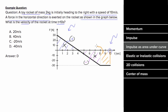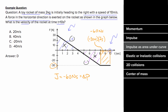This is gonna end up being a negative area, since the height of the rectangle is negative 30, and the width of the rectangle is gonna be two seconds. This gives an impulse of negative 60 Newton seconds. So if the impulse on this object is negative 60 Newton seconds, that's gonna equal the change in momentum of that object.